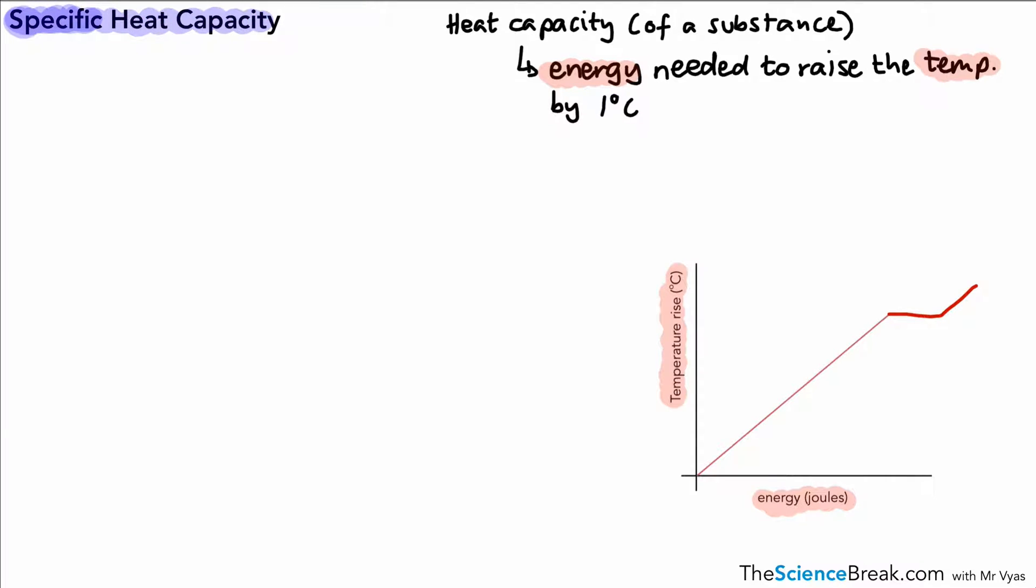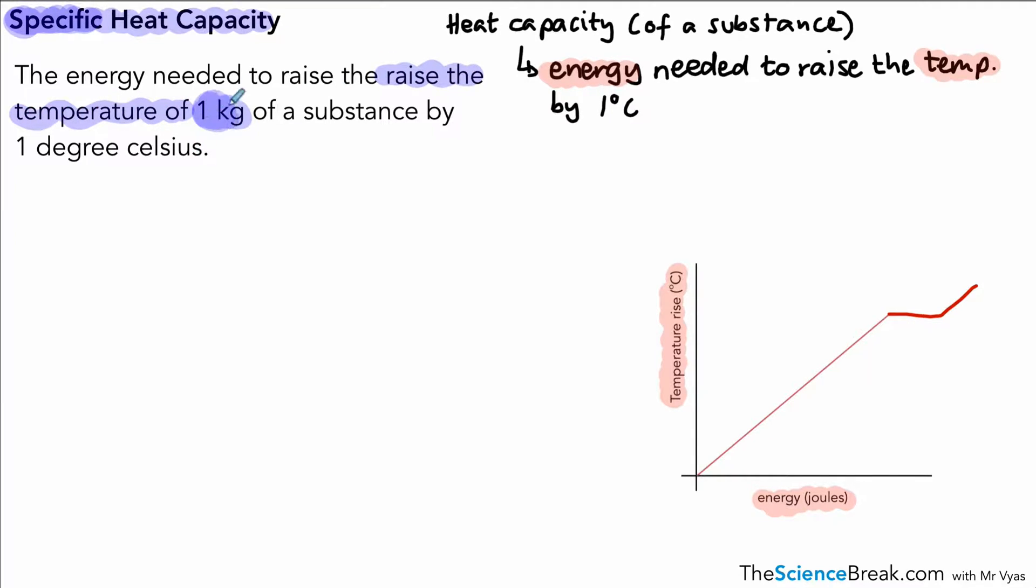Now what is specific heat capacity? Well, it's very similar to heat capacity, but we have to be a little bit more specific in terms of the amount of that substance. It's basically the same thing, but we need one kilogram of the substance. And this is useful because we can then compare the heat capacities of different materials if we always compare with one kilogram.